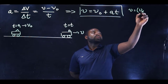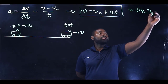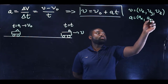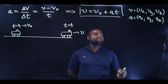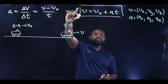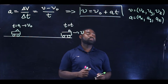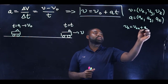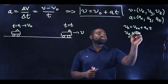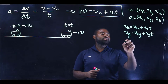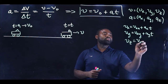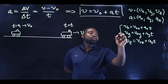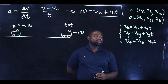That means V has a component in the x direction, a component in the y direction, and a component in the z direction. Similarly, A has a component in the x direction, a component in the y direction, and a component in the z direction. We can express this vector equation in terms of its components as: Vx = Vox + Axt, Vy = Voy + Ayt, and Vz = Voz + Azt. These are the equations in the x, y, and z directions.